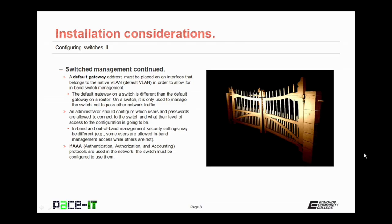The default gateway on a switch is different than on a router — on a switch, it is only used to manage the switch and not to pass other network traffic. As part of setup, an administrator should configure which users and passwords are allowed to connect to the switch and their level of access. In-band and out-of-band security settings may differ. If authentication, authorization, and accounting protocols are used in the network, the switch must be configured to use them as well.